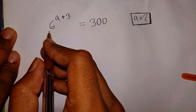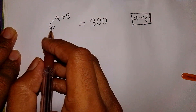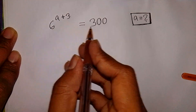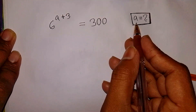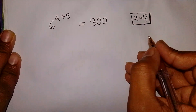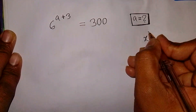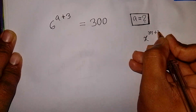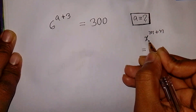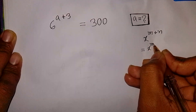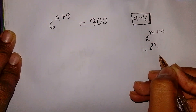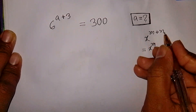Can you solve this mental math algebra problem: 6 to the power of (A plus 3) is equal to 300. Find the value of A. First of all, we apply the exponential rule that x to the power of (M plus N) is equal to x to the power M times x to the power N.